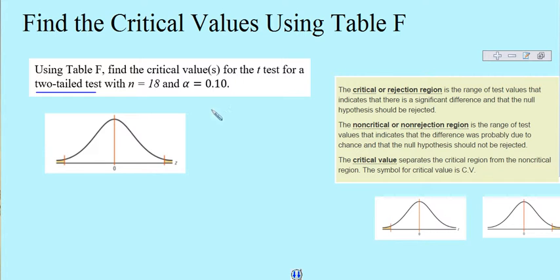Same process as the others. We identify our sample size. In this case, it was 18. We formulate our degrees of freedom, which is found by taking our sample size minus 1. So in this case, that would be equal to 17. We have a significance level, or alpha, of 0.10.